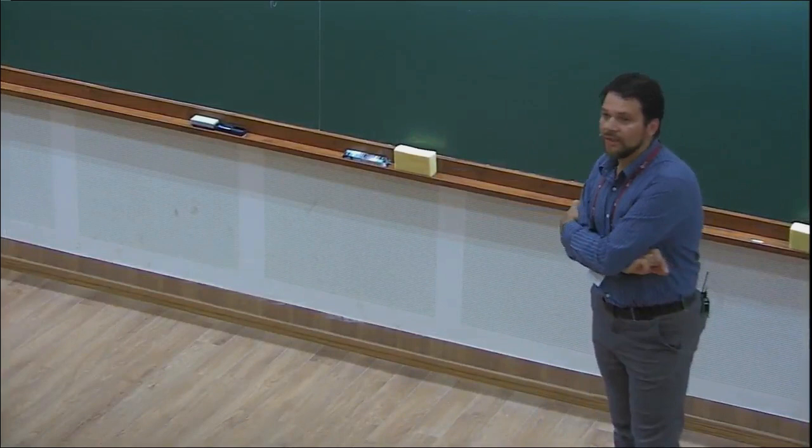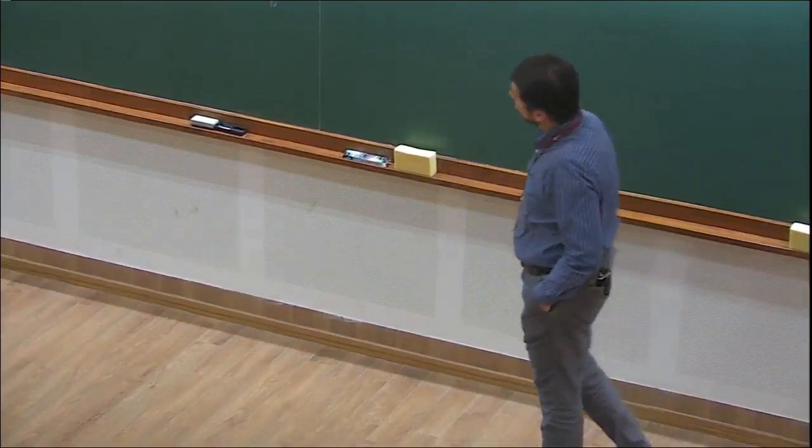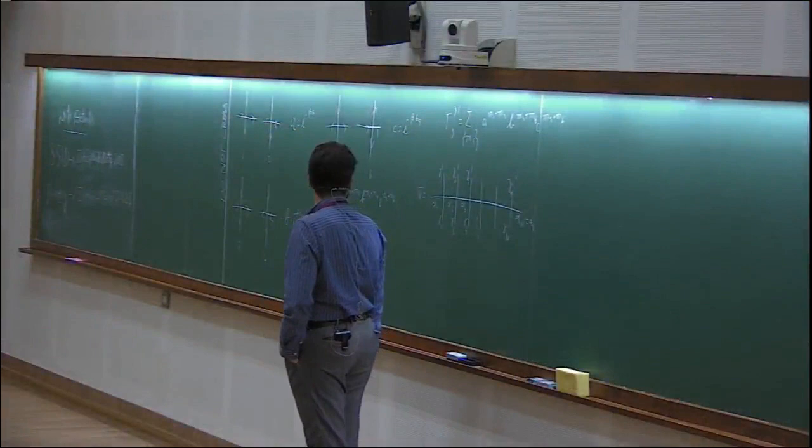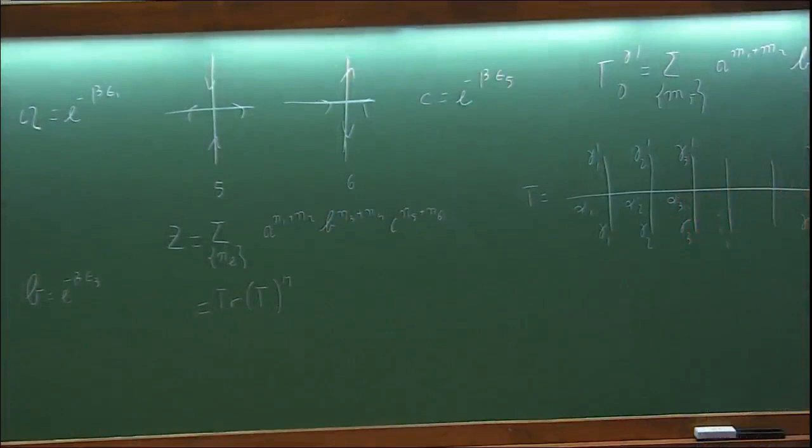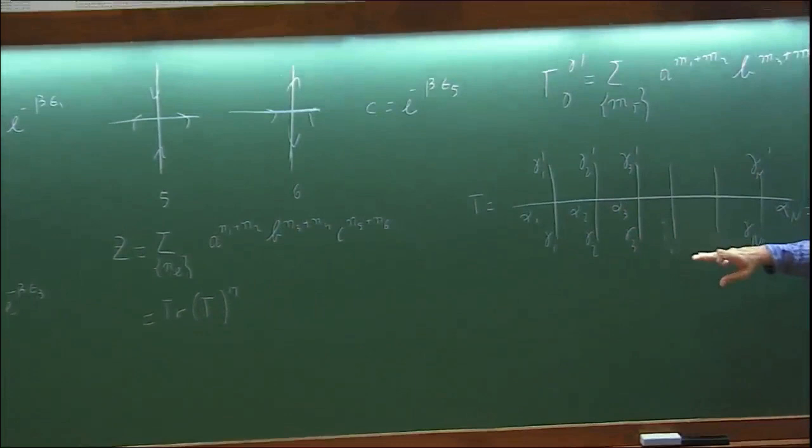Let me resume the class. We are looking to calculate the partition function of the six-vertex model, and we do it by considering one row at a time and by studying the object called the transfer matrix, which gives you the transition probability between one given configuration to the next.